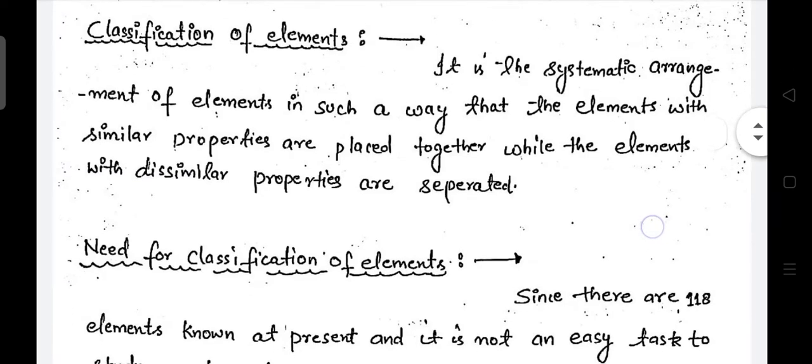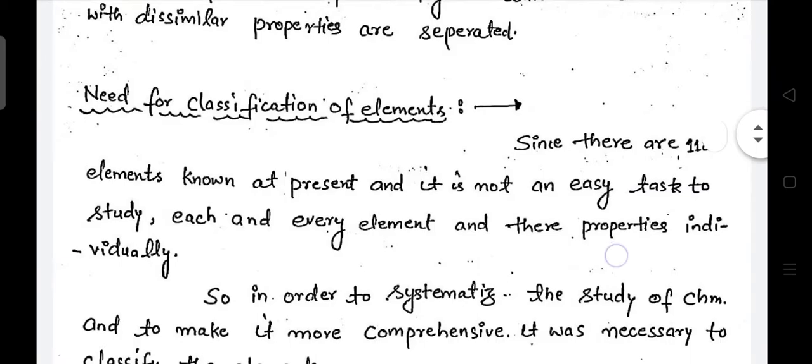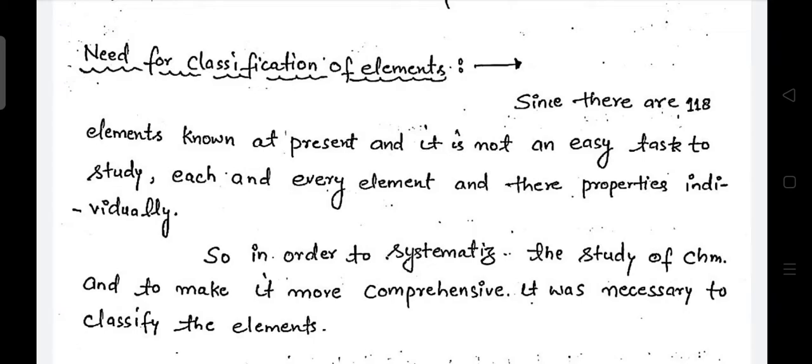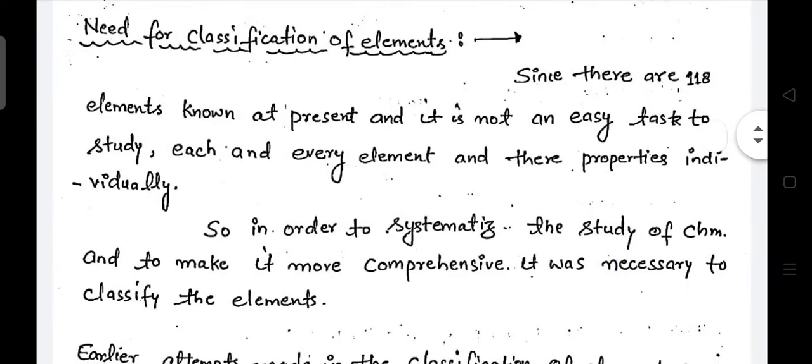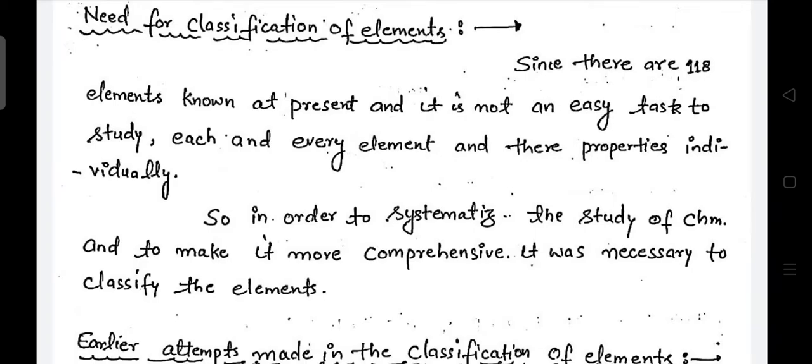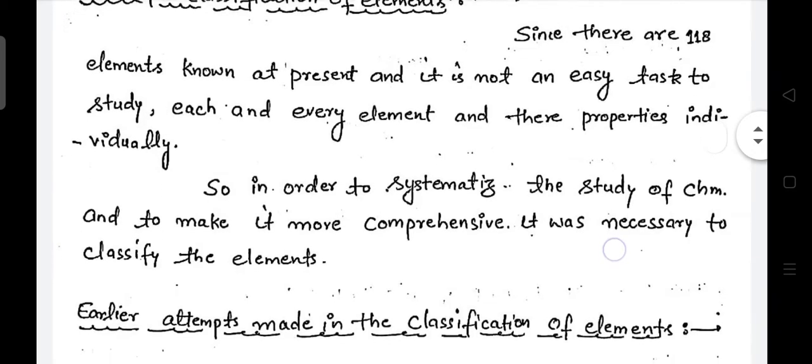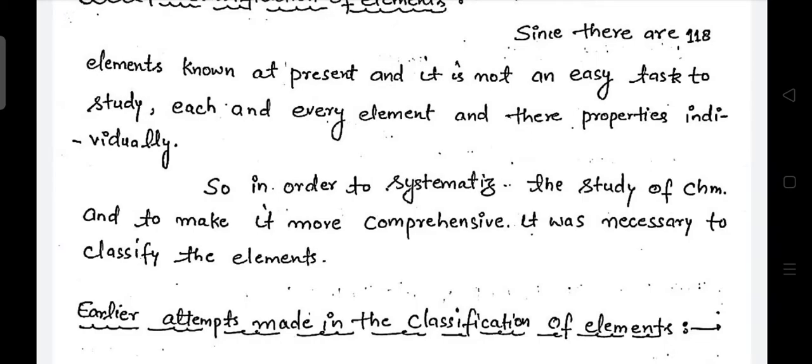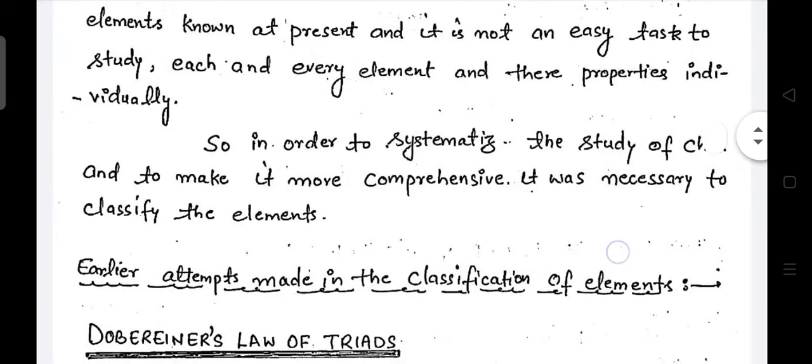What is the need for classification of elements? At present there are total 118 places for elements and 114 elements have been discovered so far. So at present it is not easy to study each and every element and their properties individually. In order to systemize the study of those elements which would be comprehensive, it was necessary to classify the elements.